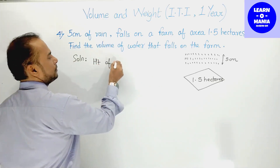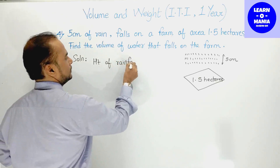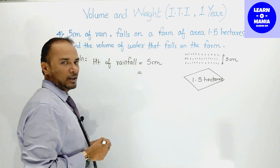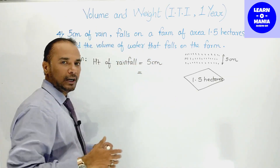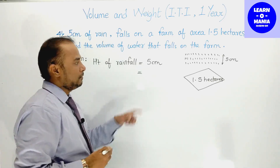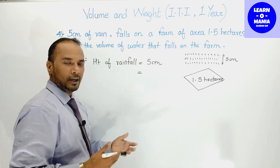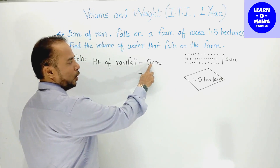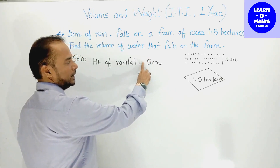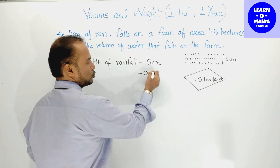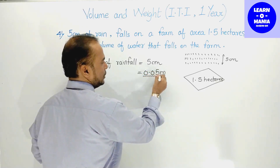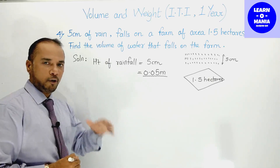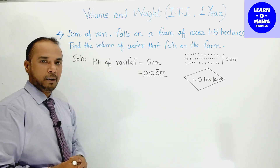Height of rainfall = 5 cm। 5 cm को meter में convert करने के लिए orally 100 से divide करें। Decimal two places shift होगी, तो meters में answer होगा 0.05 meters। यह है rainfall की height meters में।